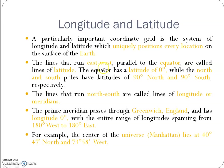The lines that run east-west, parallel to the equator, are called latitude. The equator has a latitude of 0 degrees, while the North Pole and South Pole have latitudes of 90 degrees north and 90 degrees south respectively. The lines that run north-south are called longitude or meridians.